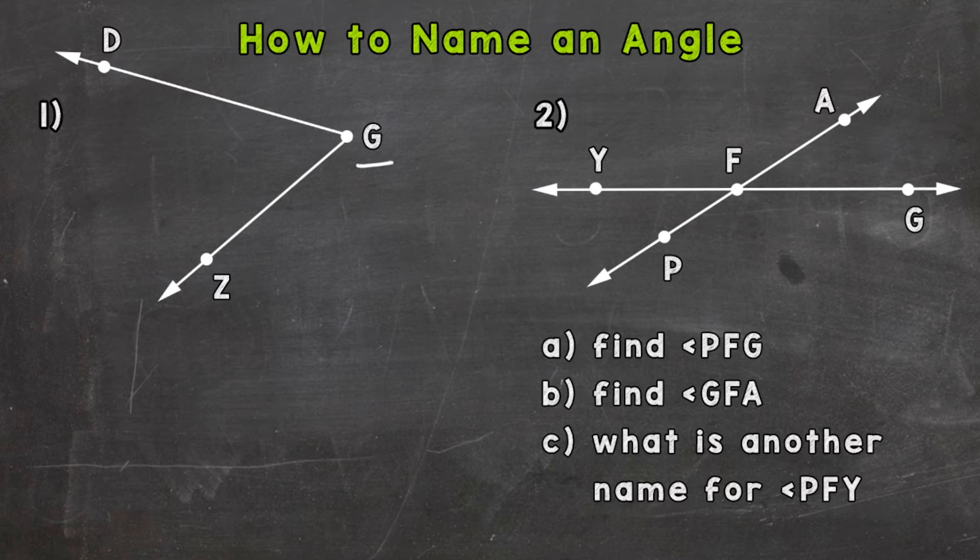After we find the vertex, we need to find a point on each line segment or line that creates the angle. Here we have a D—this line segment right here creates the angle. And this line segment here, we have a D up there and we have a Z down here.